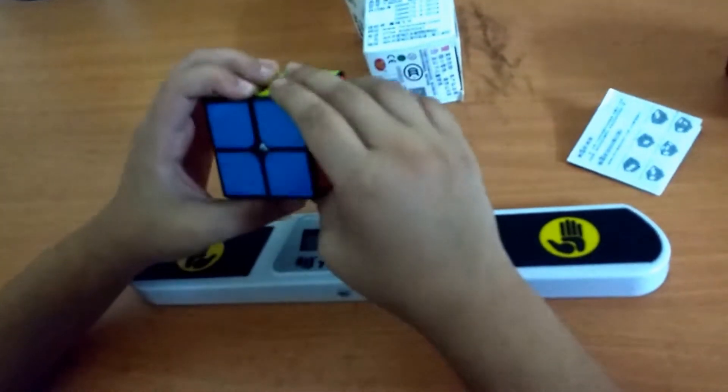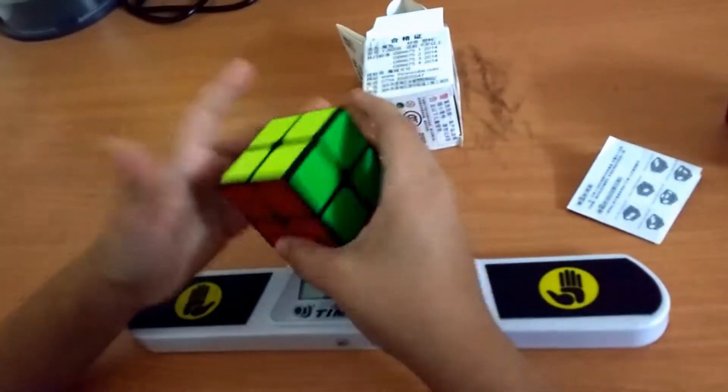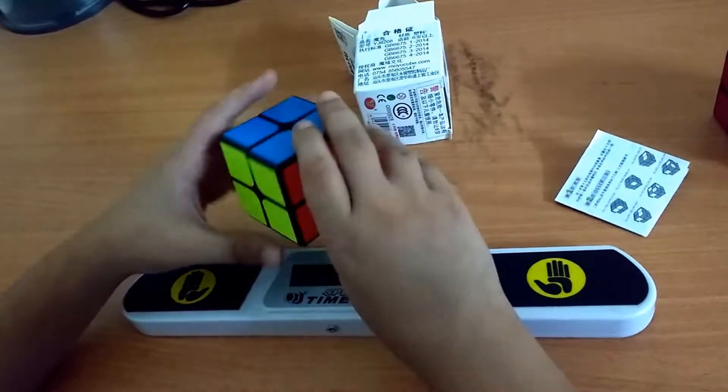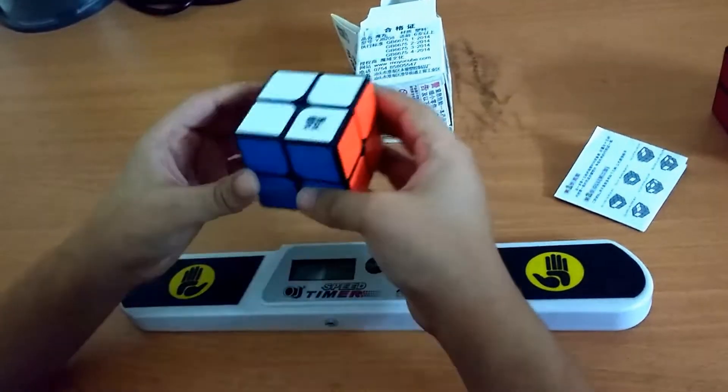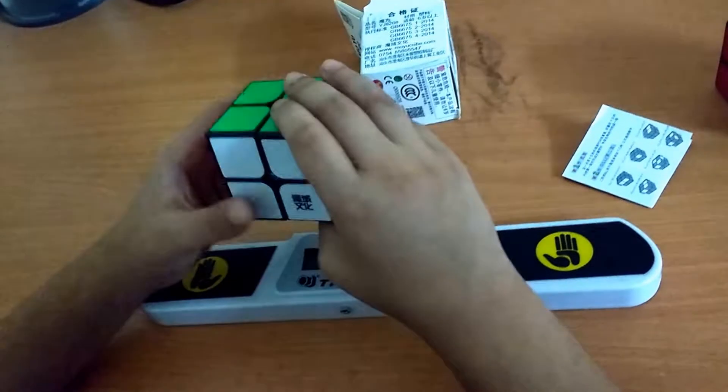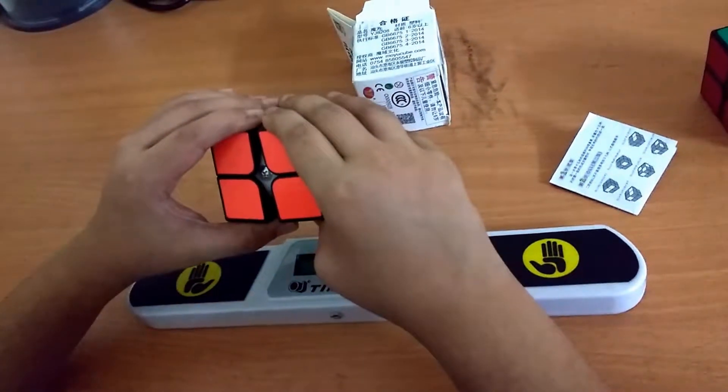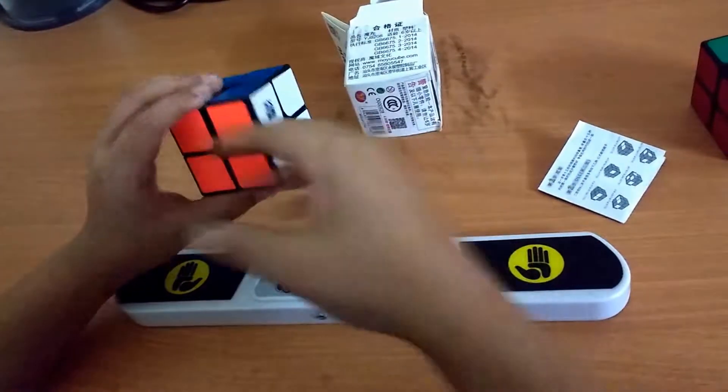So in the corner cutting and lockups category, I would give this cube a 9 out of 10 score again because of the slight design flaw problem of it catching or locking sometimes. The next category is the price of the cube.